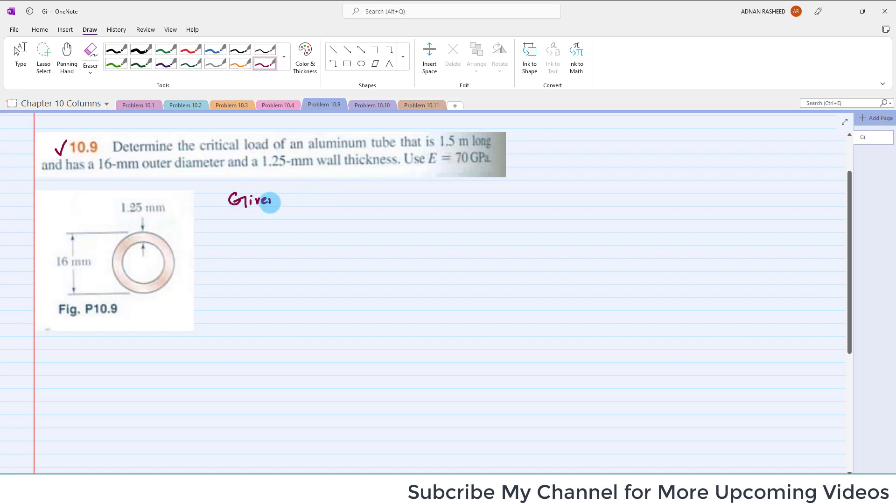First we will write the given data. It is given that it is an aluminum tube having length equal to 1.5 meters long. Outer diameter D naught is 16 millimeters.